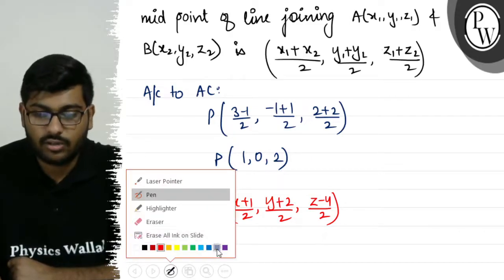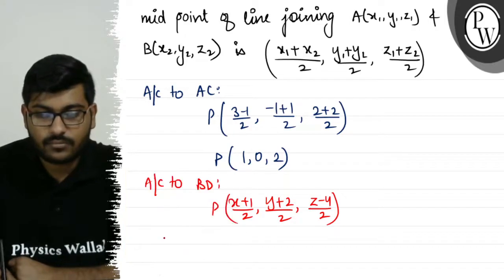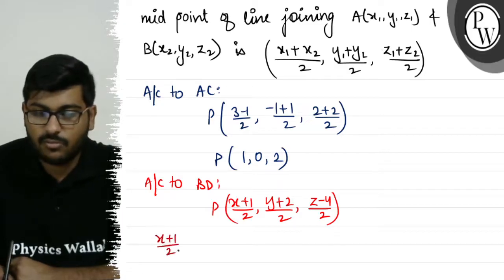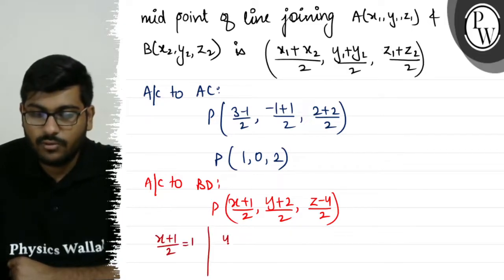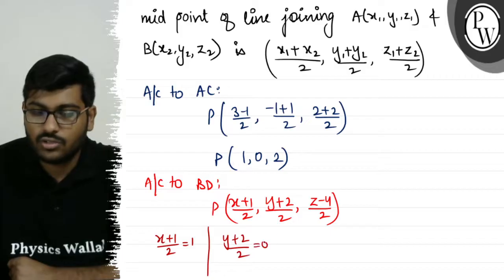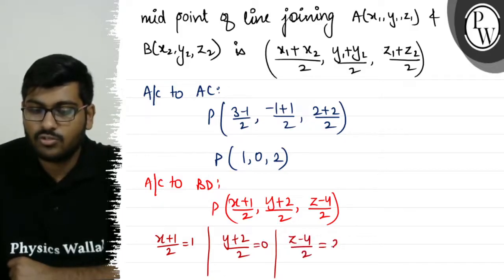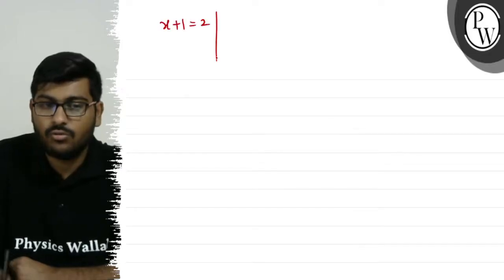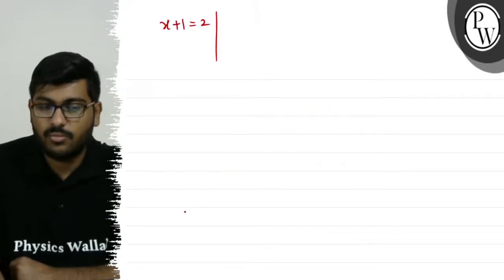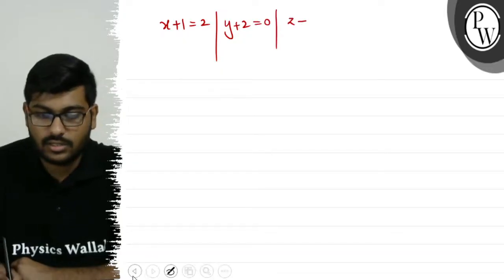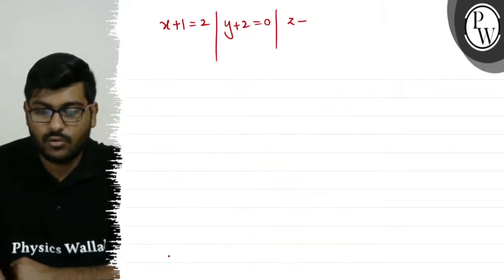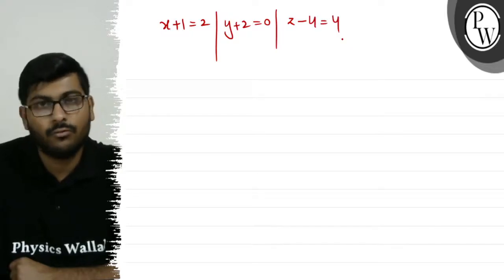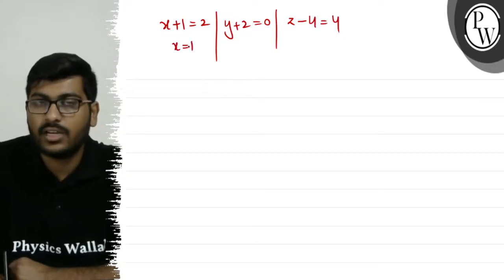Since both midpoints are equal, we equate them. First: (x+1)/2 = 1, so x+1 = 2, giving x = 1. Then: (y+2)/2 = 0, so y+2 = 0, giving y = -2. Then: (z-4)/2 = 2, so z-4 = 4, giving z = 8.